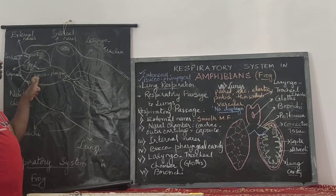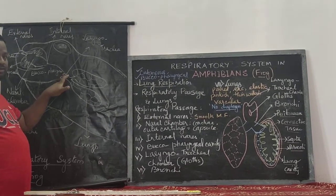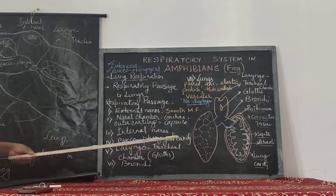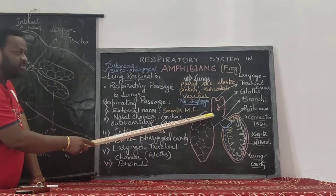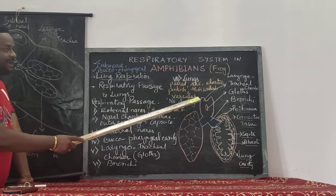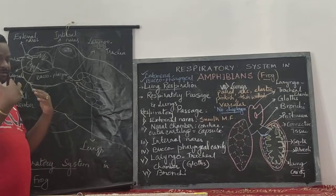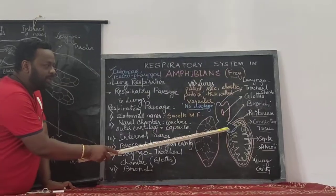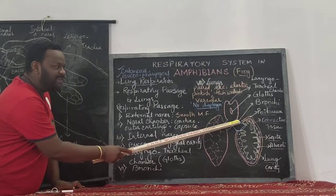The mouth cavity and the pharynx together form the buccopharyngeal region, which continues down at the posterior side with a structure called the laryngotracheal chamber. The laryngotracheal chamber is a short but very vital chamber with a longitudinal slit called the glottis. The laryngeal region acts as the region where the oxygen from the buccopharyngeal region is made to pass through the tracheal part, which is a shorter tube leading downward.